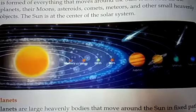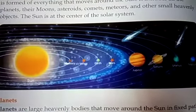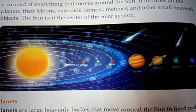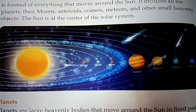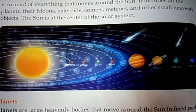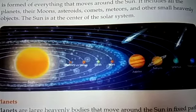Planets are large heavenly bodies that move around the sun in fixed path called orbit. That means they move in their own way, in their path. They will not go into others path.